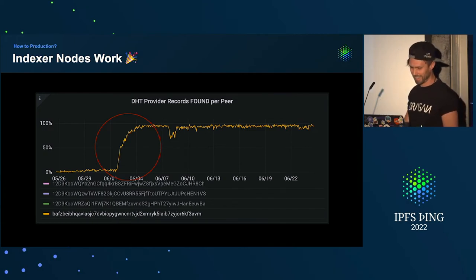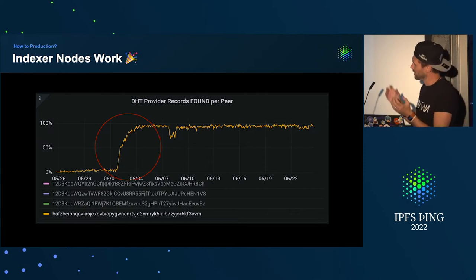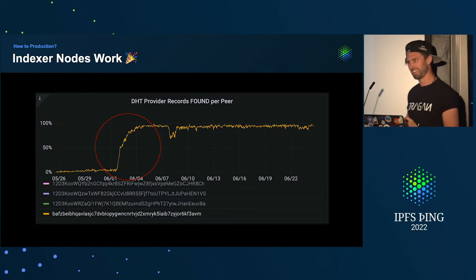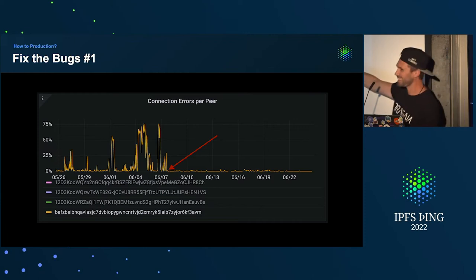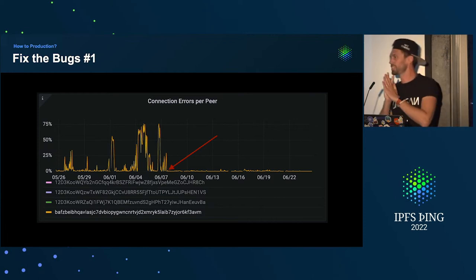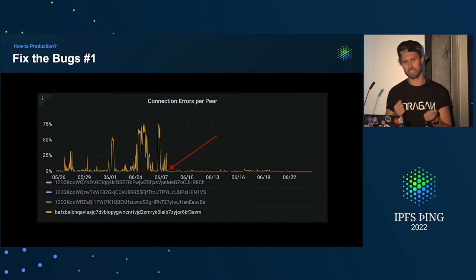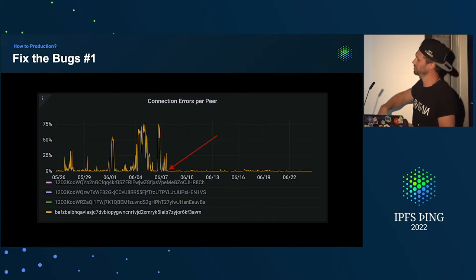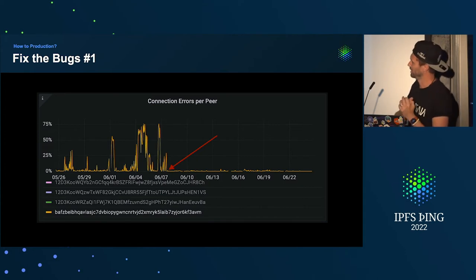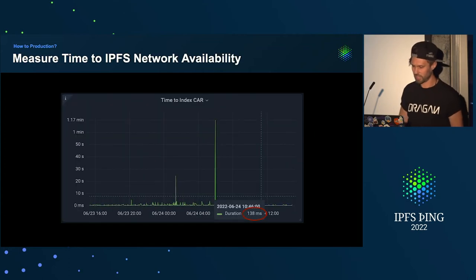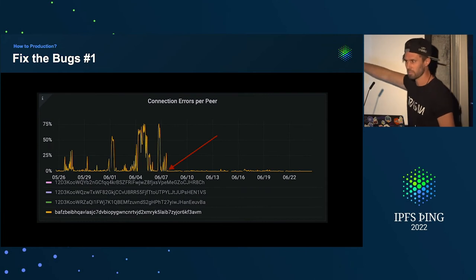Once the indexer nodes had indexed all of this data, provider records were essentially available on the DHT, so people started discovering Elastic IPFS. That put it under load, which was great — but then we saw connection errors. In Node.js there's this massive footgun: if you have an event emitter and you emit an event called 'error' without listening for that event, it takes down the whole process. It turned out we'd missed that in one of the connections we were making, and that was causing the errors. We fixed it, and after that it was resolved — though there were still some connection errors to address.